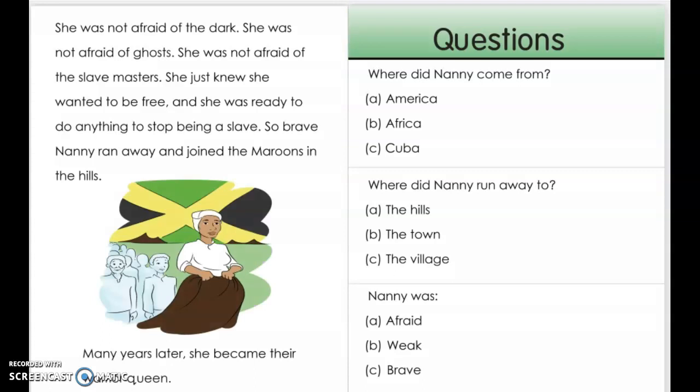She was not afraid of the dark. She was not afraid of ghosts. She was not afraid of the slave masters. She just knew she wanted to be free, and she was ready to do anything to stop being a slave. So, brave Nanny ran away and joined the Maroons in the hills.